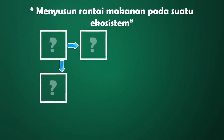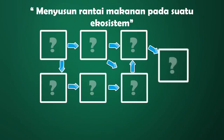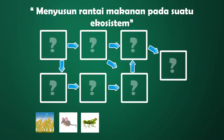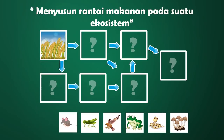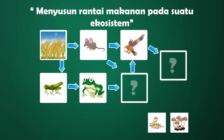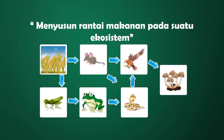Hari ini teman-teman kita mendapatkan tugas dari sekolah untuk membuat prakarya rantai makanan. Tugasnya adalah menempatkan pilihan hewan-hewan ke dalam kotak-kotak agar menjadi susunan rantai makanan yang tepat. Sobat XScience, tahu tidak komponen apa saja yang terdapat dalam rantai makanan? Yuk kita saksikan bersama penjelasan narasumber berikut.